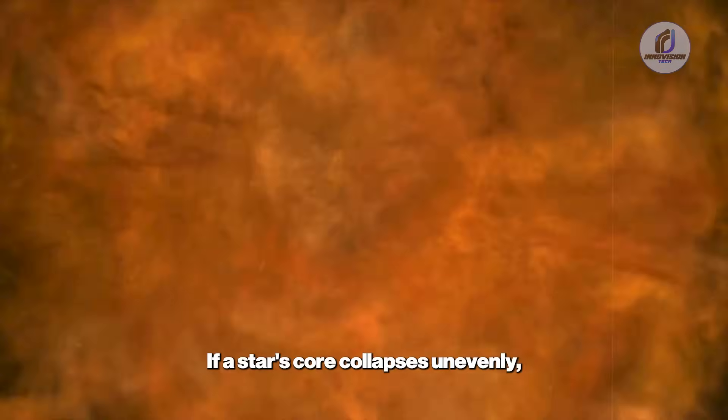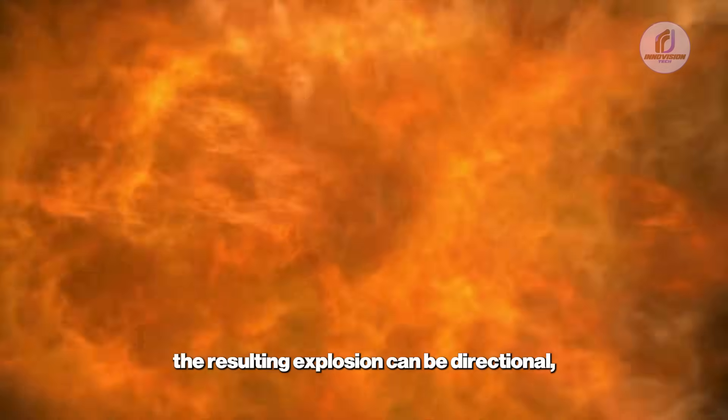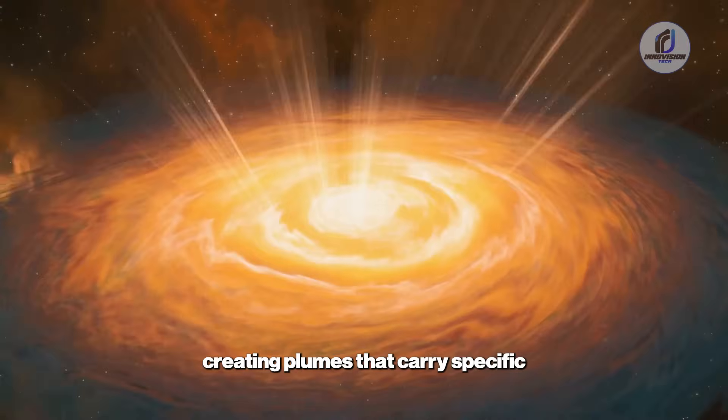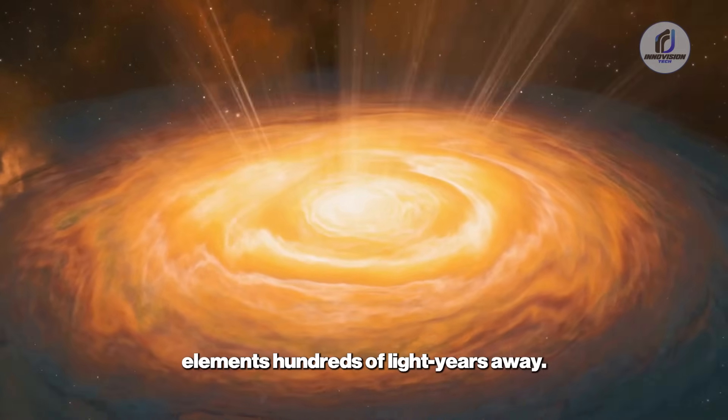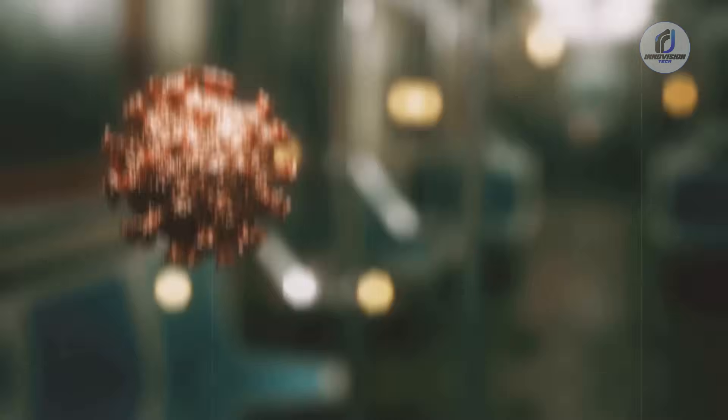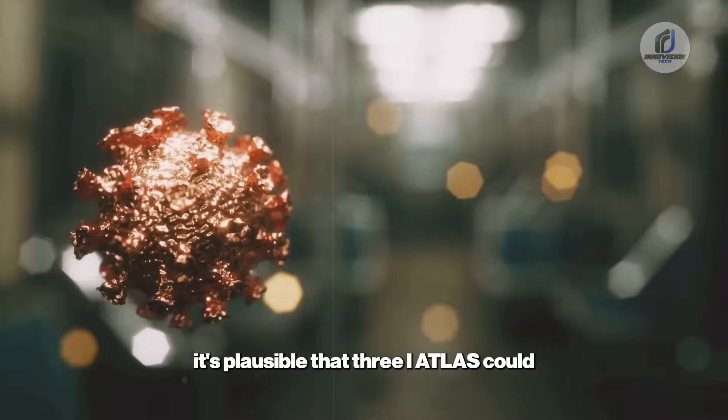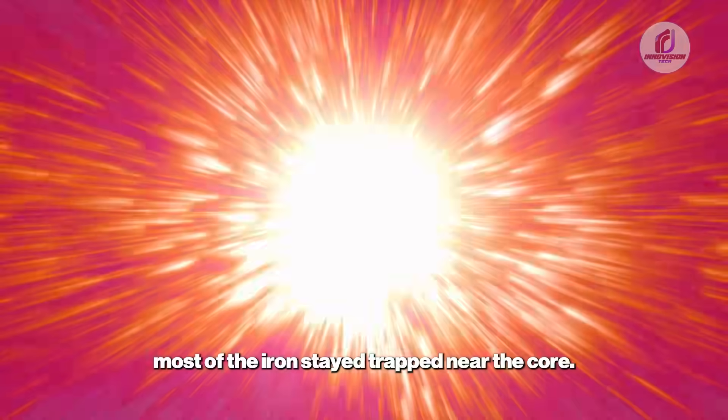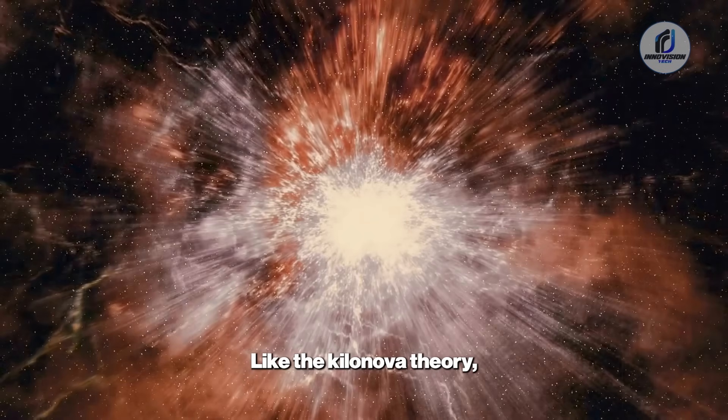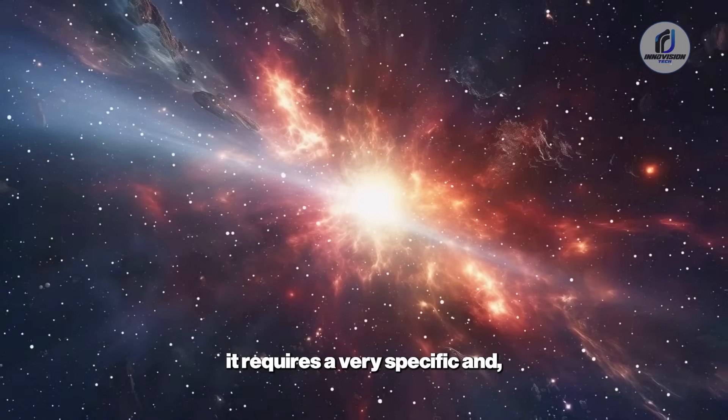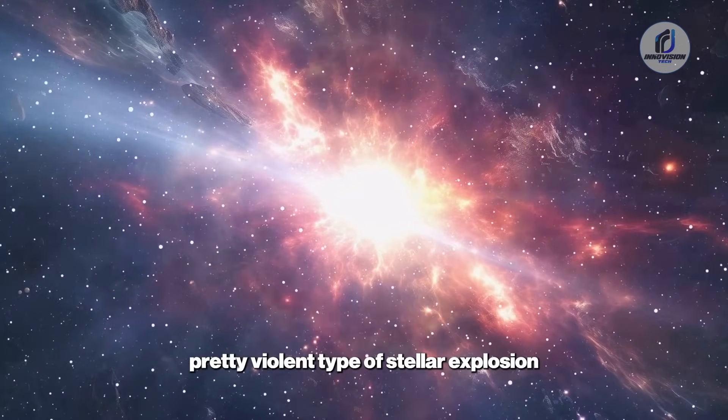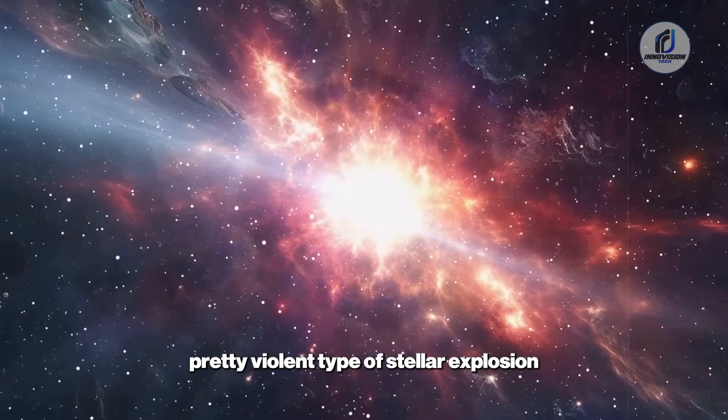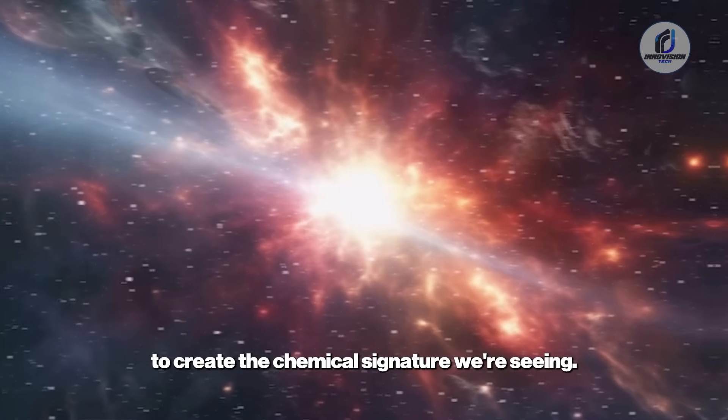If a star's core collapses unevenly, the resulting explosion can be three-directional, creating plumes that carry specific elements hundreds of light-years away. So, it's plausible that 3I Atlas could be a fragment formed from a jet of nearly pure nickel, blasted away from its parent star while most of the iron stayed trapped near the core. Like the kilonova theory, this is a natural explanation. However, it requires a very specific and honestly pretty violent type of stellar explosion to create the chemical signature we're seeing.